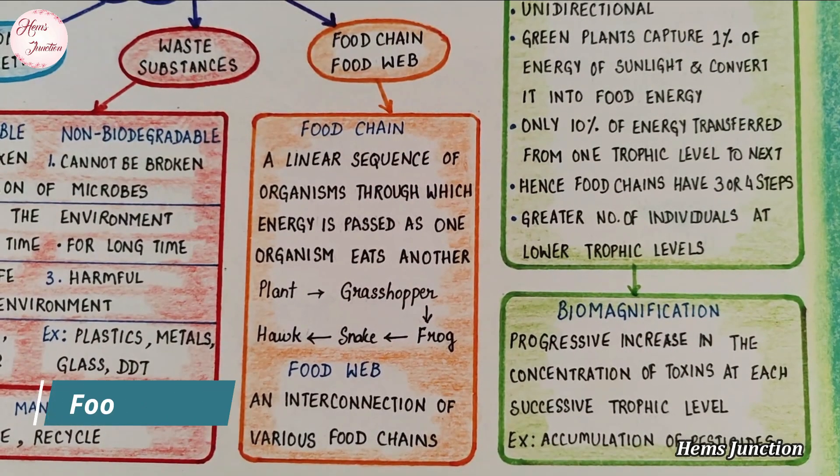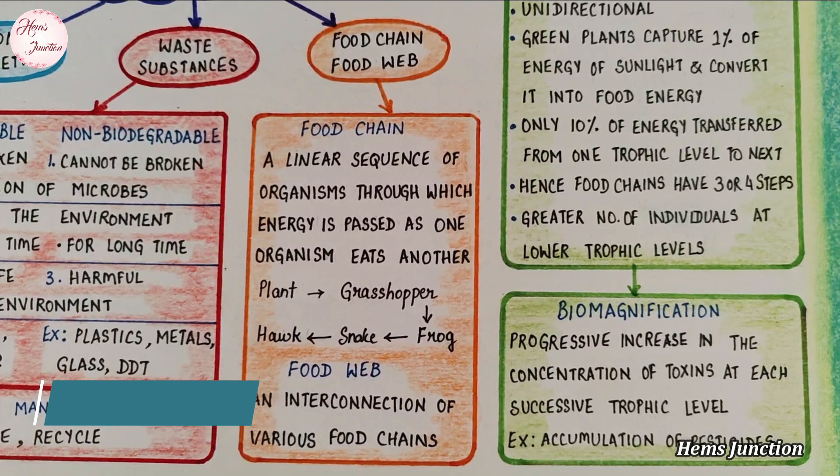Food chain and food web. A linear sequence of organisms feeding on one another forms a food chain. A food web is an interconnection of various food chains where each organism eats several types of organisms or is eaten by many different organisms.